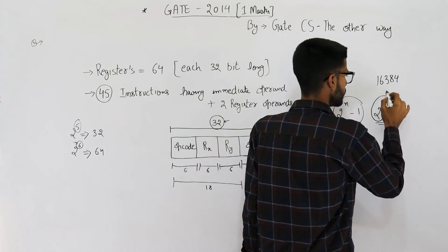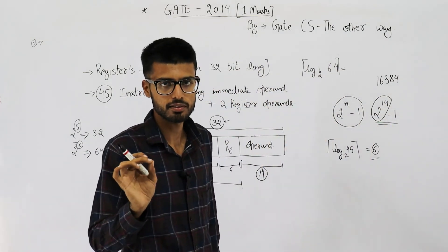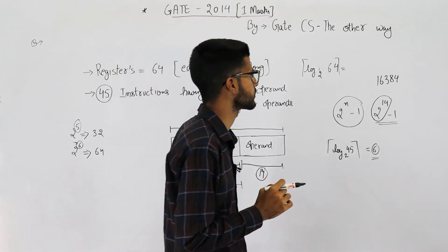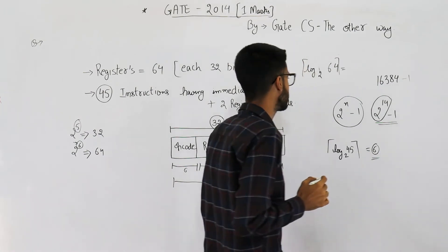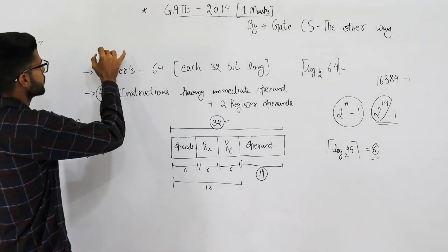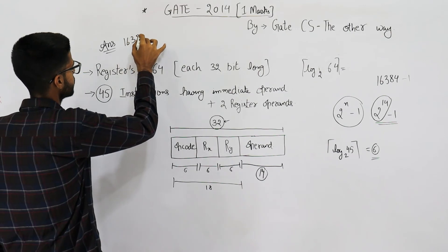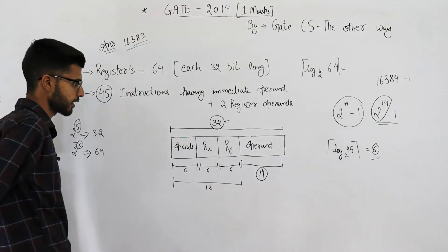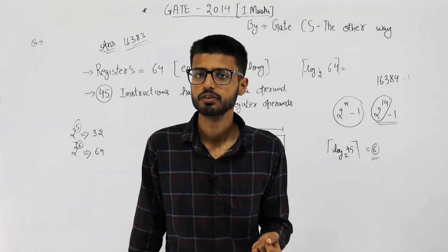This is the largest value that we can represent in the immediate operand. 2 power 14 is 16384. Yeah, you need to remember these values, the powers of 2. You need to remember at least till 16, that means from 2 power 0 to 2 power 16. Minus 1, which is 16383. So the answer here is 16383. This is the largest value that could be represented here. Okay, hope to see you in the next video.